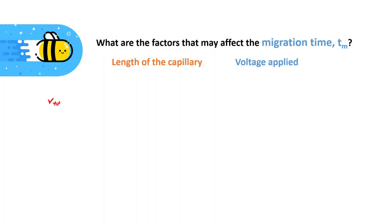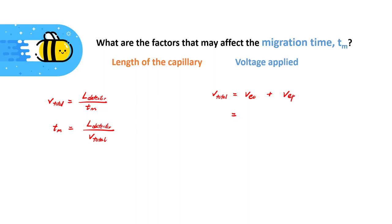We know that the migration rate, V_total, is equal to the length to the detector divided by the migration time. Rearranging this equation, the migration time will be equal to the length to the detector divided by the migration rate. From a previous video, we know that the total migration rate is equal to the electro-osmotic velocity plus the electrophoretic velocity. The electro-osmotic velocity equals the electro-osmotic mobility multiplied by the electric field, and similarly, the electrophoretic velocity equals the electrophoretic mobility multiplied by the electric field. We can simplify this into the following relationship.